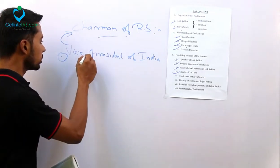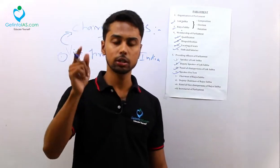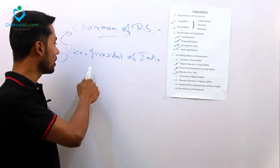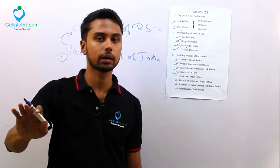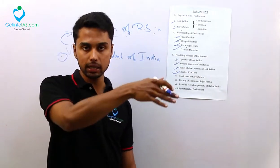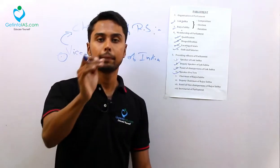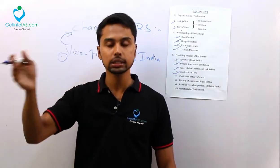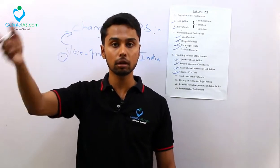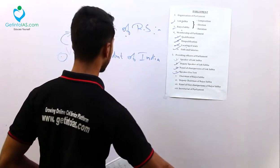One important point: the Speaker is one among the members of Parliament, but the Chairman of Rajya Sabha is not. The Vice President is not a member of Parliament — he is not a member of Rajya Sabha — but he is the Chairman of Rajya Sabha. That is the difference between the Speaker and the Chairman. The Speaker is a member of Parliament, but the Chairman of Rajya Sabha is not, because the Chairman of Rajya Sabha is the Vice President of India.